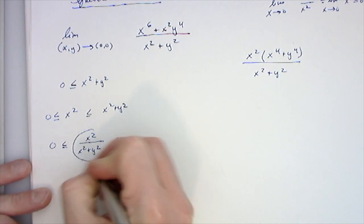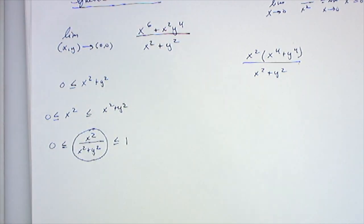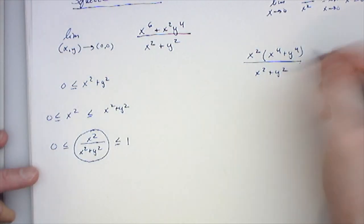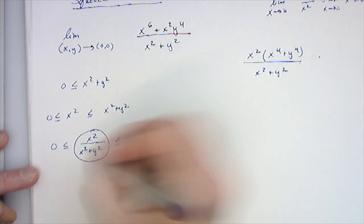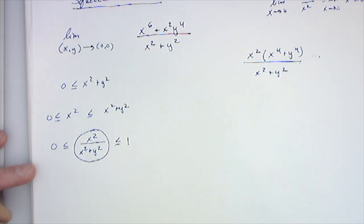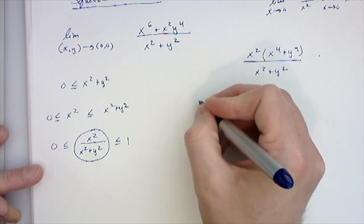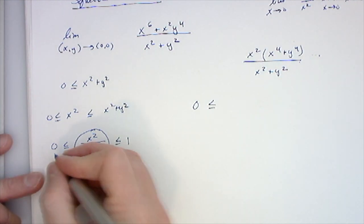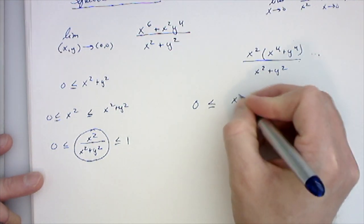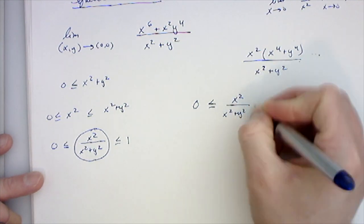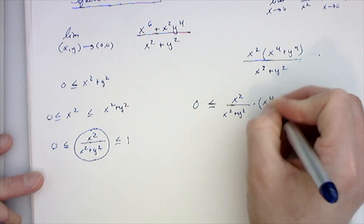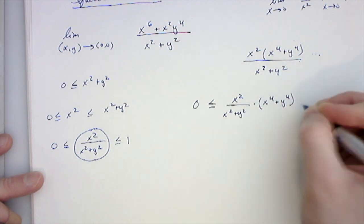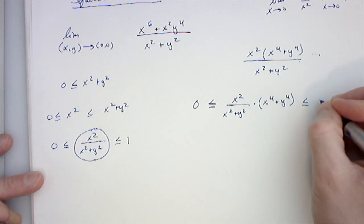So this quantity, I'm essentially squeezing, except I don't want just that, I really want this thing over here. So I'm going to take this down and multiply it by x to the 4th plus y to the 4th. So I'm going to have 0 is less than or equal to x squared over x squared plus y squared times x to the 4th plus y to the 4th, which is less than or equal to 1 times x to the 4th plus y to the 4th.